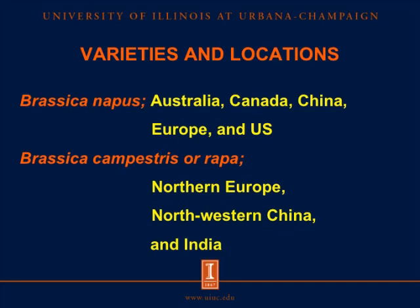For variety and location of canola and rapeseed, there are two different varieties grown in different regions around the world. Brassica napus can grow in Australia, Canada, China, Europe, and the U.S. Brassica carinata or rapa can grow in Northern Europe, Northwestern China, and India.